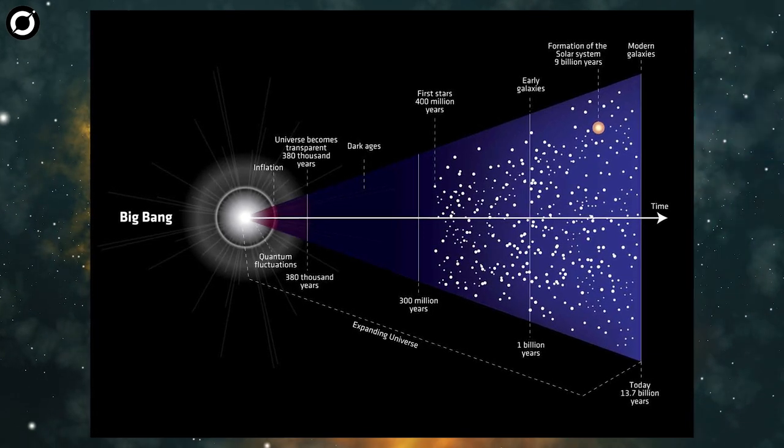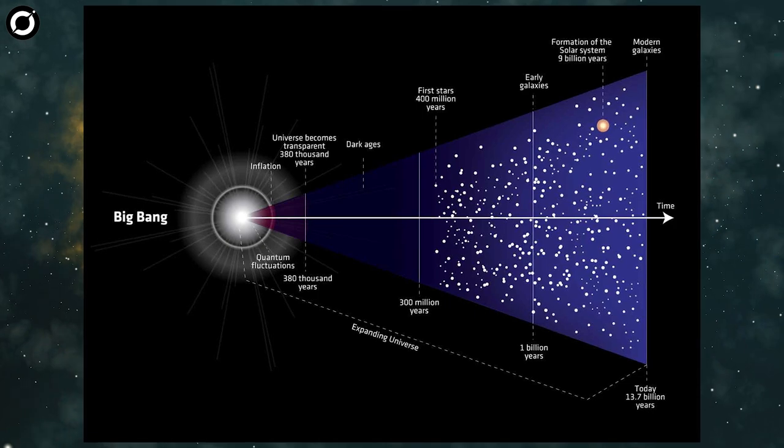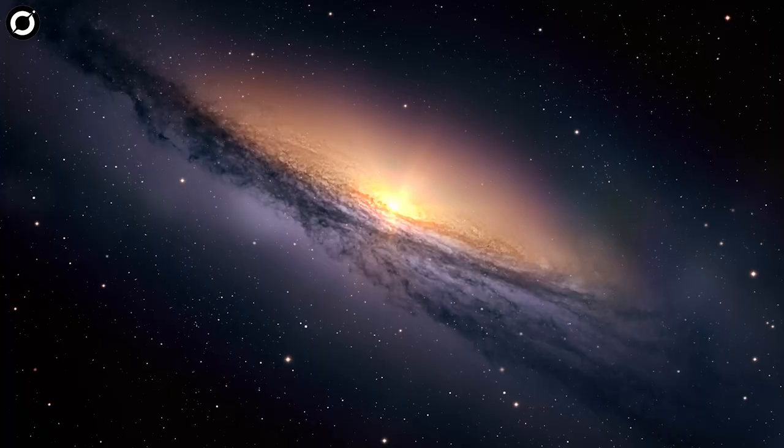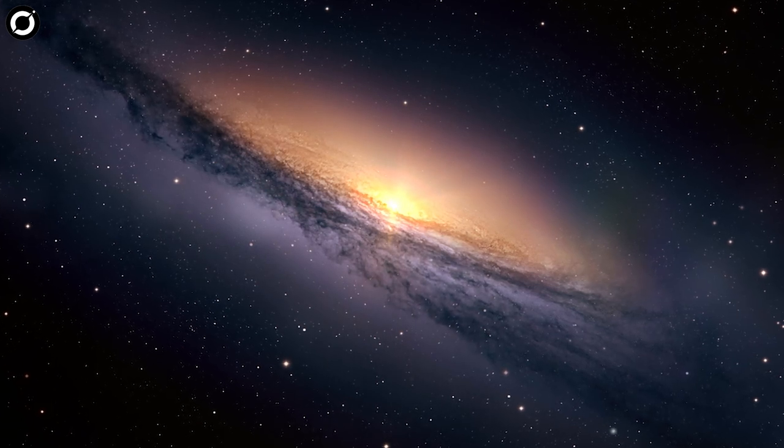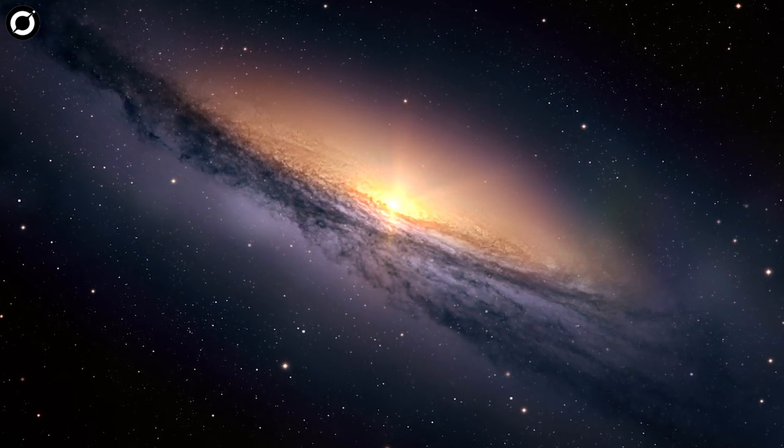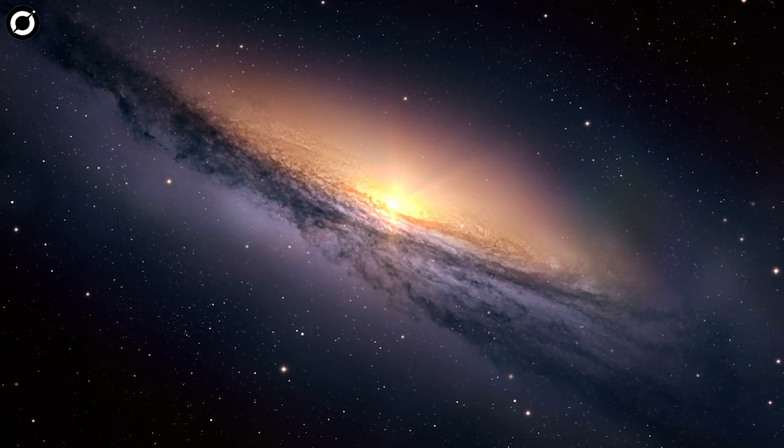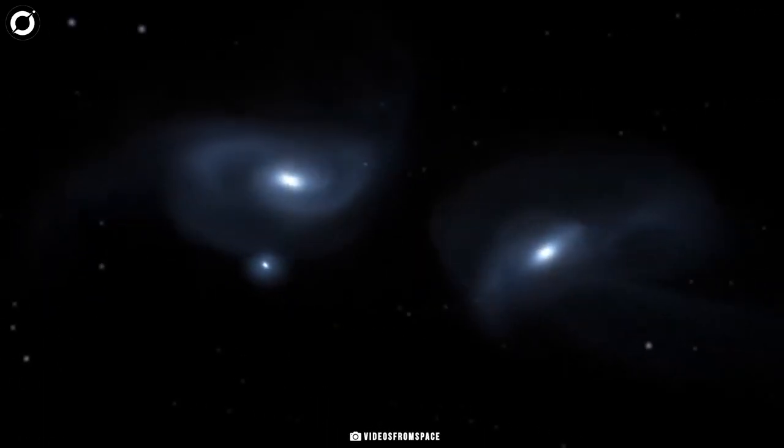Currently accepted theories suggest that one to two billion years into the universe's life, these early proto-galaxies reached adolescence, forming into dwarf galaxies that began devouring each other to grow into ones like our own Milky Way galaxy.